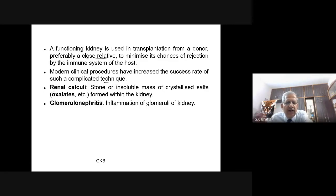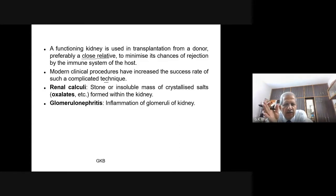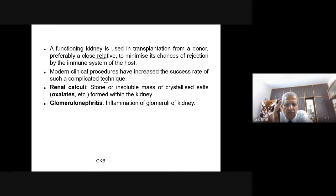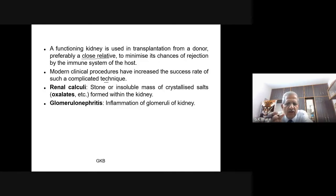Another disorder is renal calculi — kidney stones — which form because of crystallization of oxalates. To avoid kidney stone formation, one must drink sufficient water from early on — at least 4 to 5 litres per day. This is beneficial not only to avoid kidney stones but also for easy bowel movement. Another important disorder associated with the kidney is glomerulonephritis — inflammation of the glomeruli of the kidney.